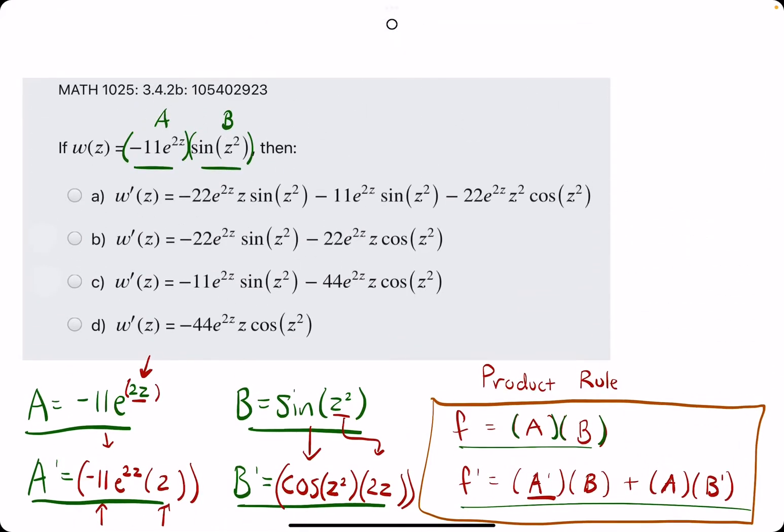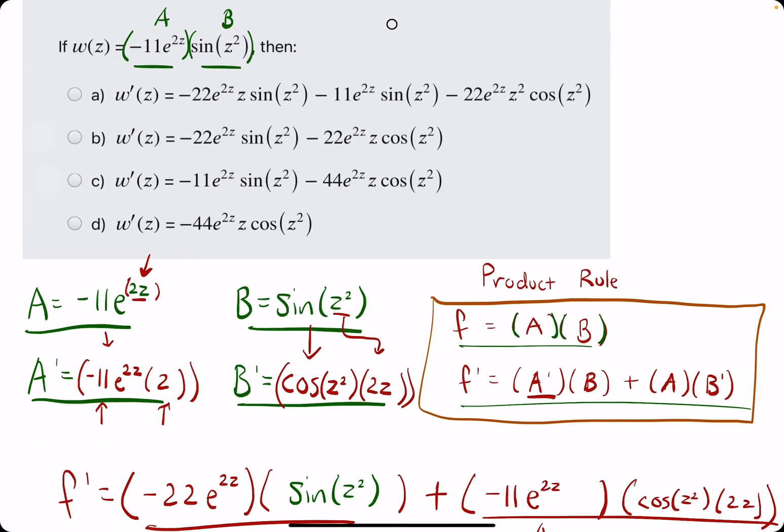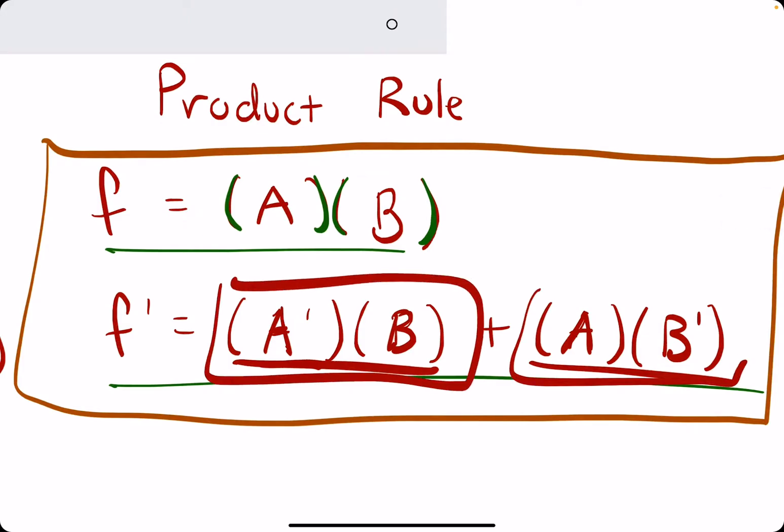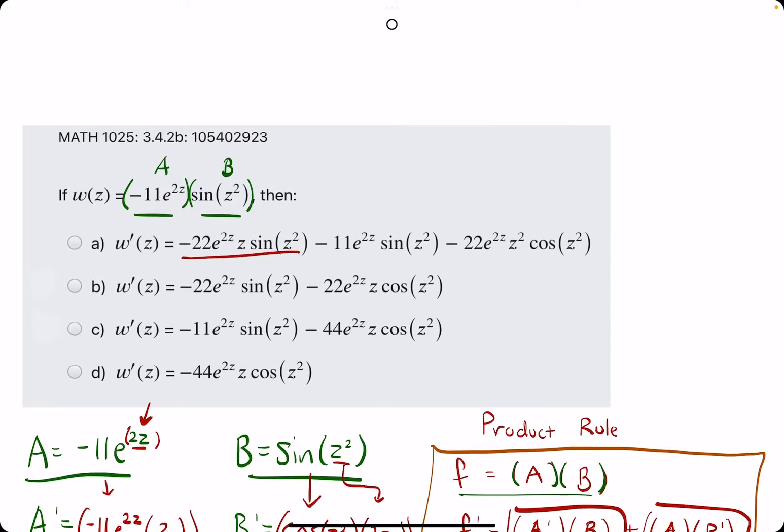So, let's check out our options. A big tip is product rule always has two pairs of expressions multiplied together, but then being added together. So, what we have are two big terms being added together. Option A has three terms being added or subtracted together, so it would never be an answer like A. And D just has one big term, so it would never be an answer like D.